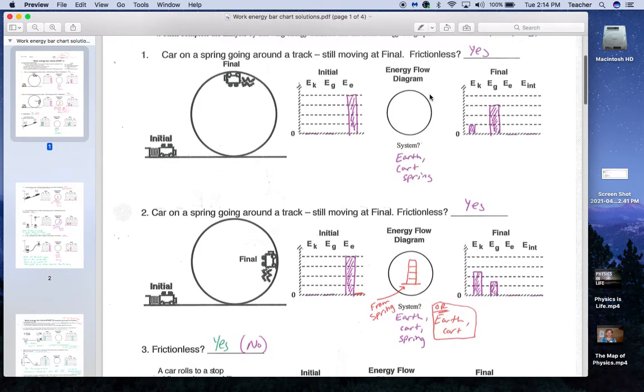In this case, for number two, I switched this up, and I had two possible systems. In purple, I have the same system as I had initially, the earth, cart, and the spring. Or in red, I have only the earth or the cart. Initially, if the spring is in the system, it's the same as in number one. The spring is not in the system, then we've got zero elastic energy here.